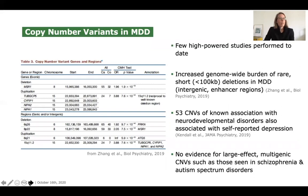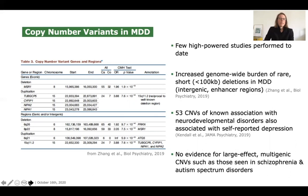Next to rare single nucleotide variants, copy number variants may present another form of genetic variation implicated in MDD. However, very few high-powered studies have been performed, though there are ongoing PGC efforts to address this. One large-scale study showed an increase in genome-wide burden of rare short deletions in MDD, mapping mostly to intergenic and enhancer regions, suggesting they may alter RNA expression levels. Kim Kendall, using UK Biobank data, showed that 53 CNVs of known association with neurodevelopmental disorders are also associated with self-reported depression. However, there is no evidence for large-effect multigenic CNVs such as those seen in schizophrenia or autism spectrum disorders.